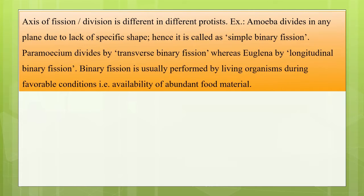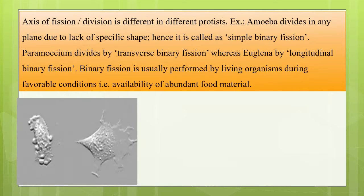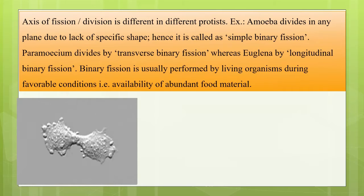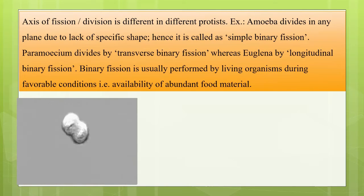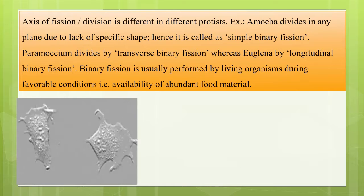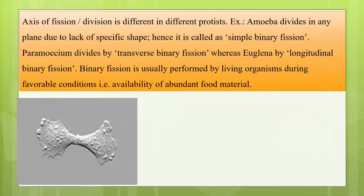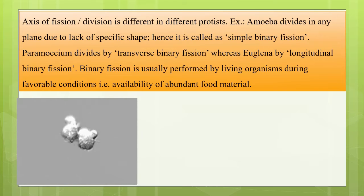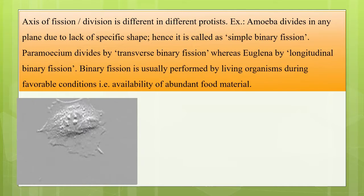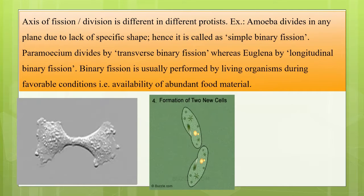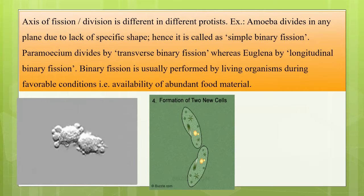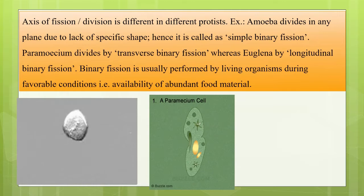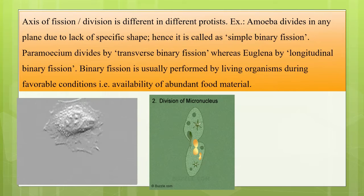For example, amoeba doesn't have a proper shape — it is irregular in shape. Hence, when it divides, it divides in any plane due to lack of specific shape, so it is called simple binary fission. Whereas when we talk about paramecium, it divides by transverse binary fission. If you pay attention closely, you can see how it is dividing — that is called transverse binary fission.